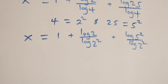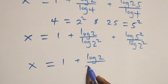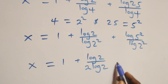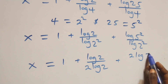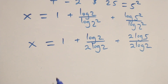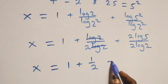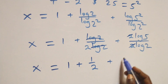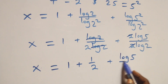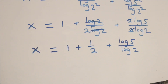Applying the power of logarithm, the exponents come down: x equals 1 plus log 2 over 2 log 2 plus log 5 over 2 log 2. The log 2 terms cancel in the first fraction leaving 1/2, and in the second fraction the log 2 terms cancel leaving log 5 over log 2. So x equals 1 plus 1/2 plus log 5 over log 2, which simplifies to 3/2 plus log 5 over log 2.